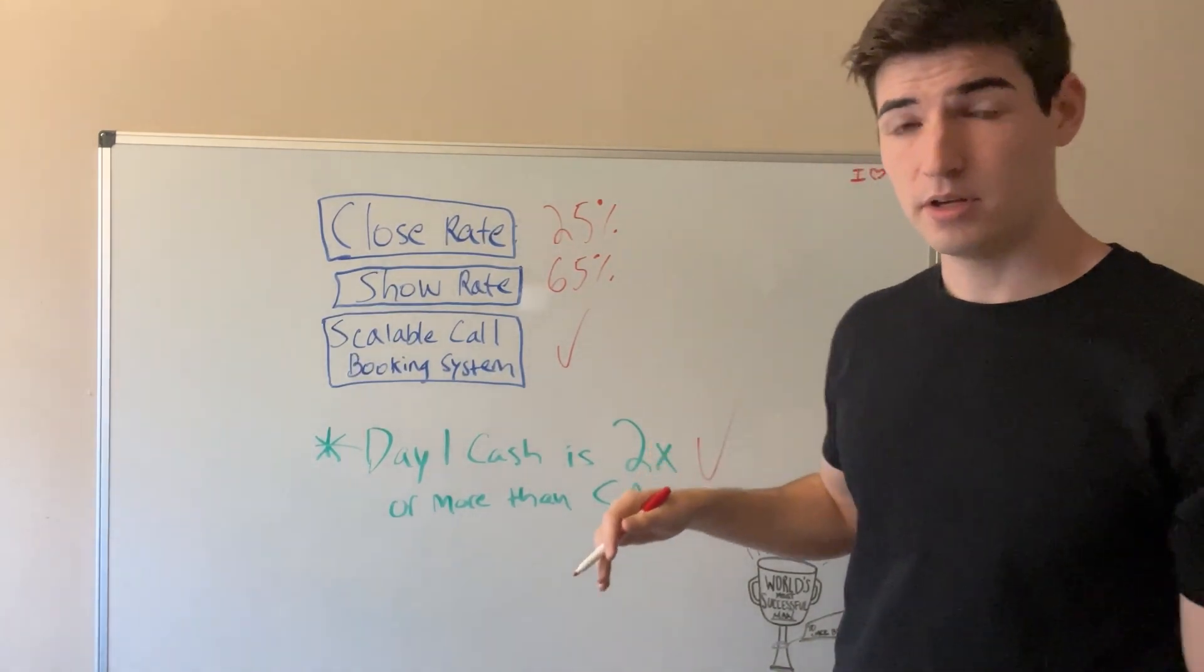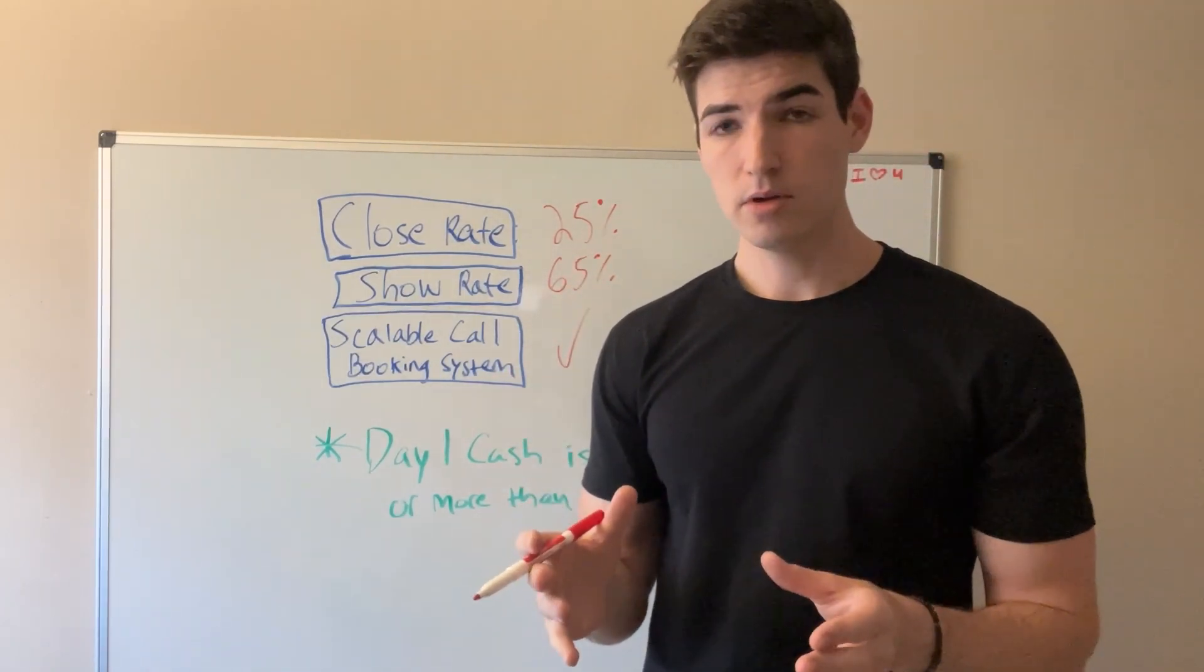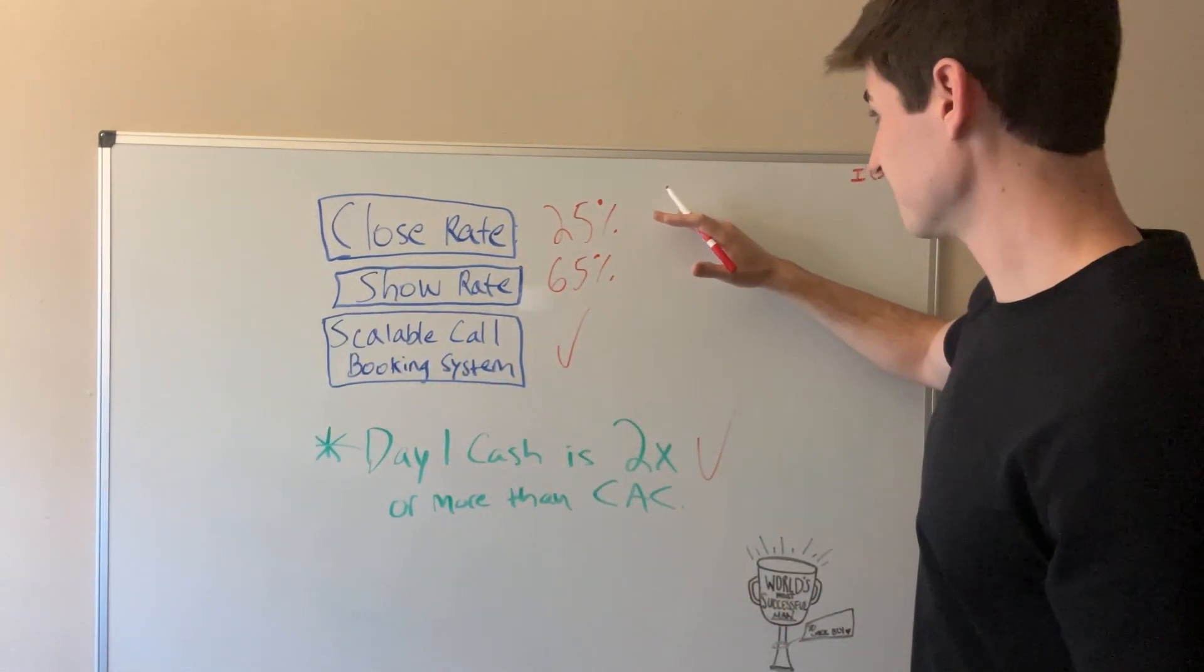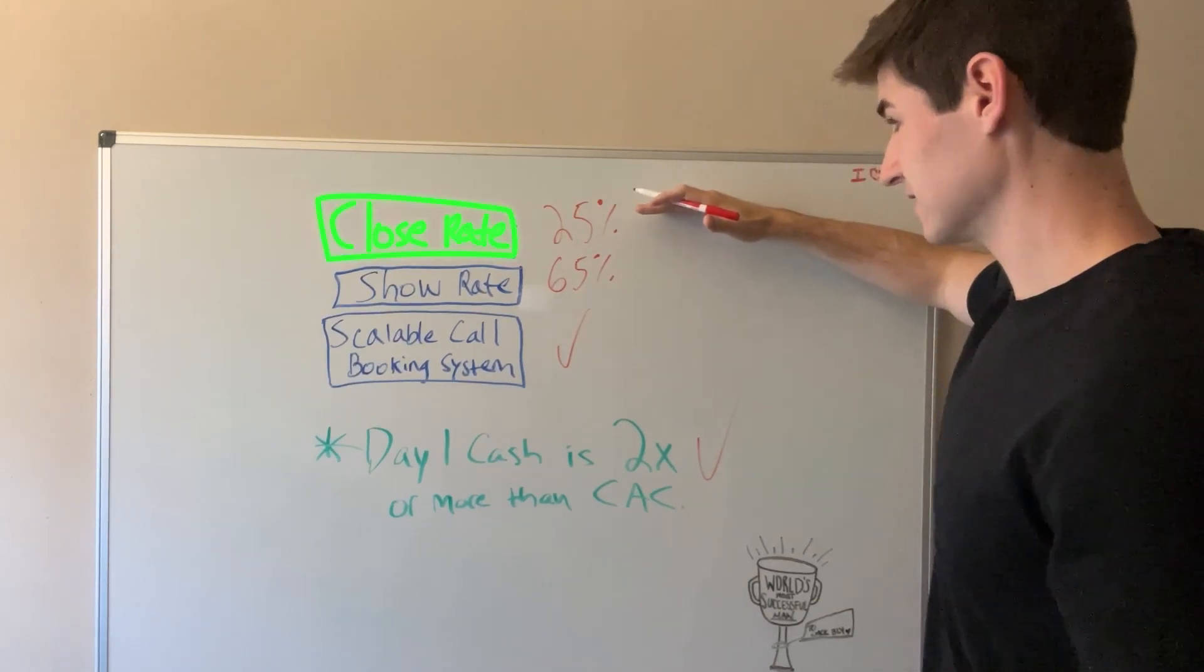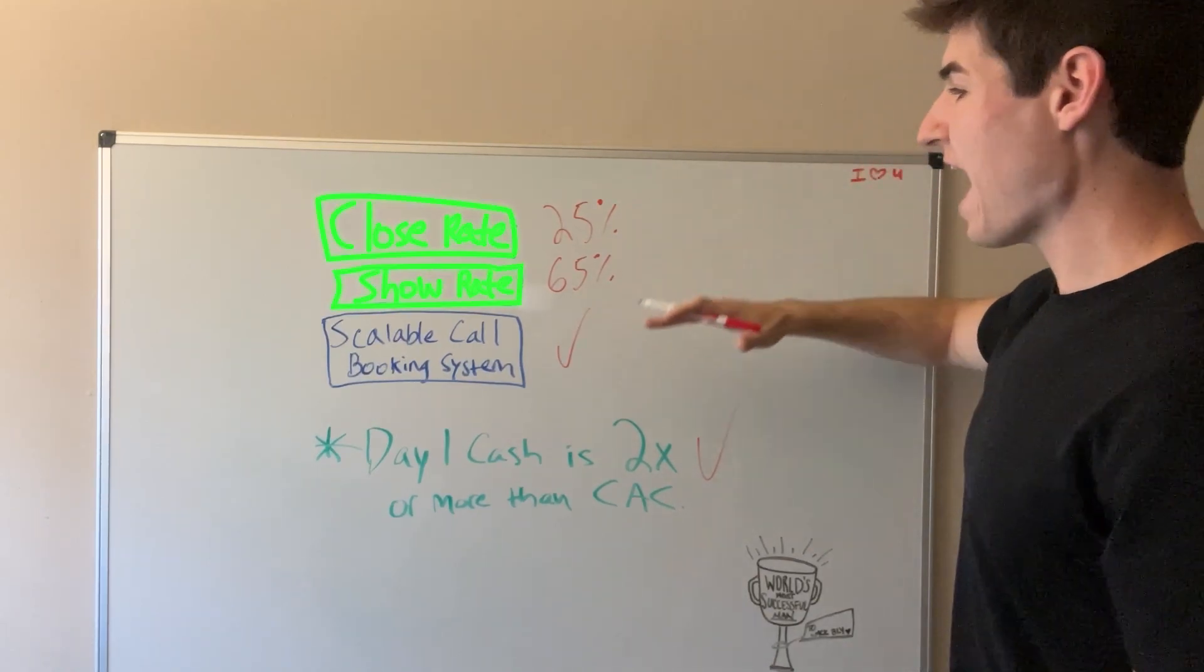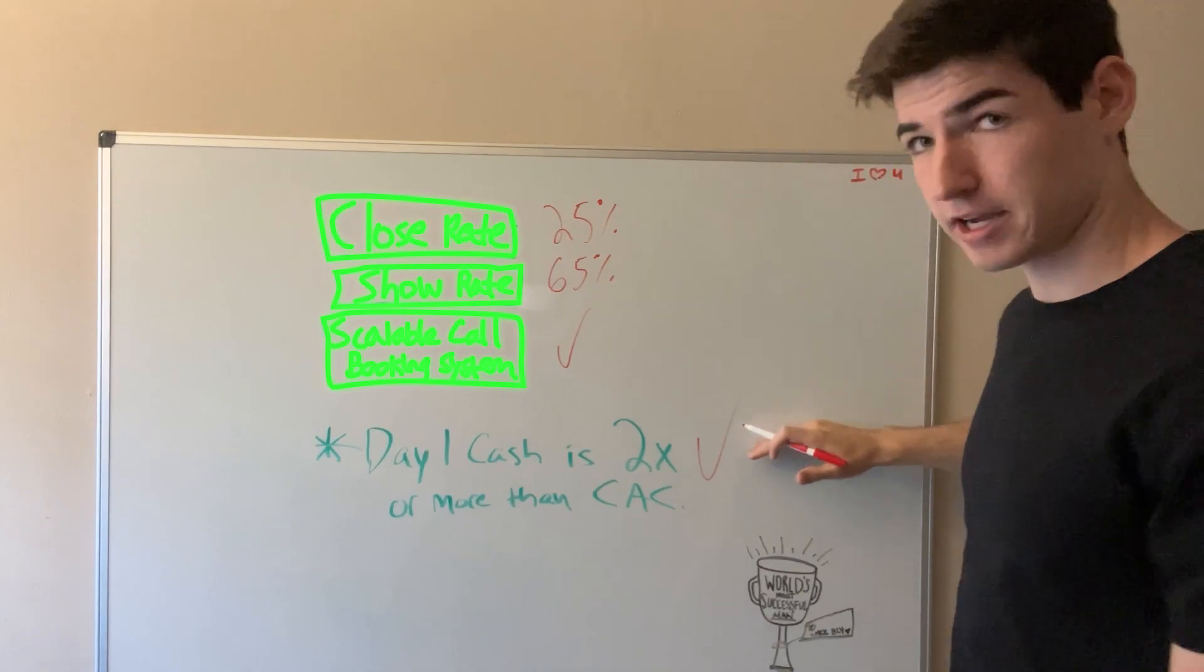This is the first step. Your whole first step when building your business is to get to these business conditions where you're consistently hitting this, you have this in place, and the economics check out. That's step one.